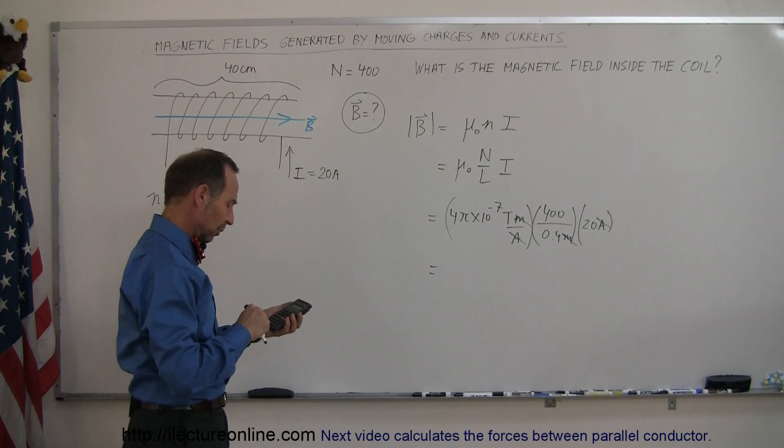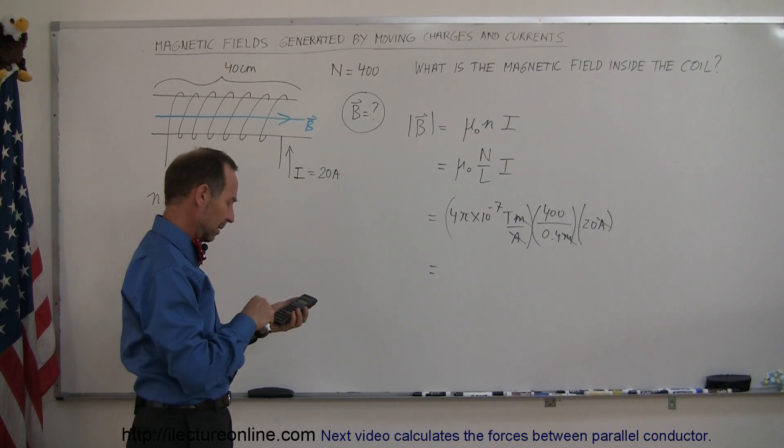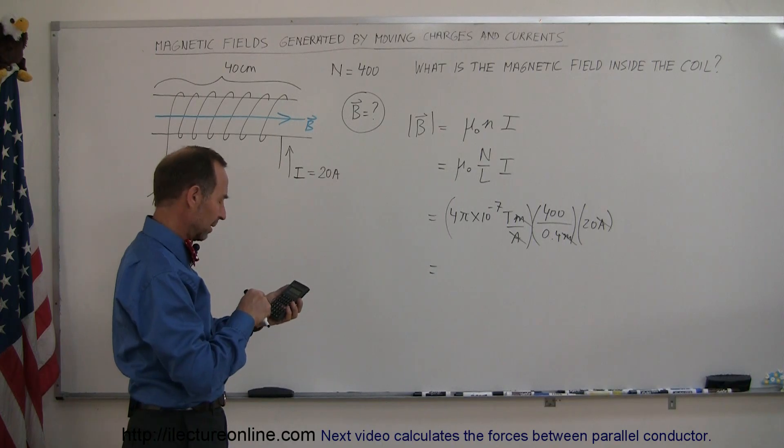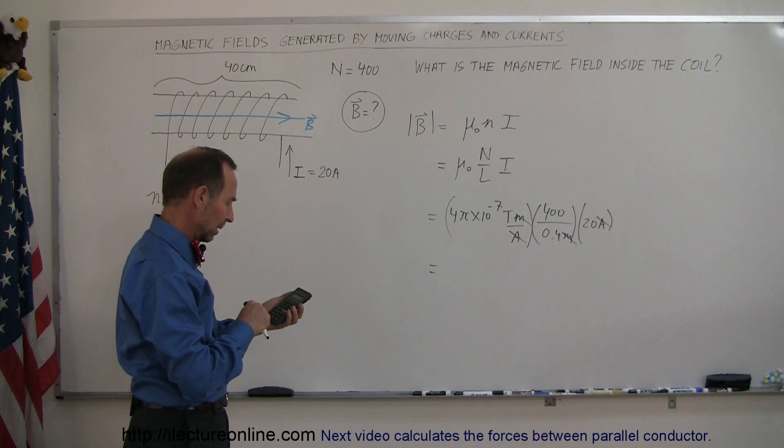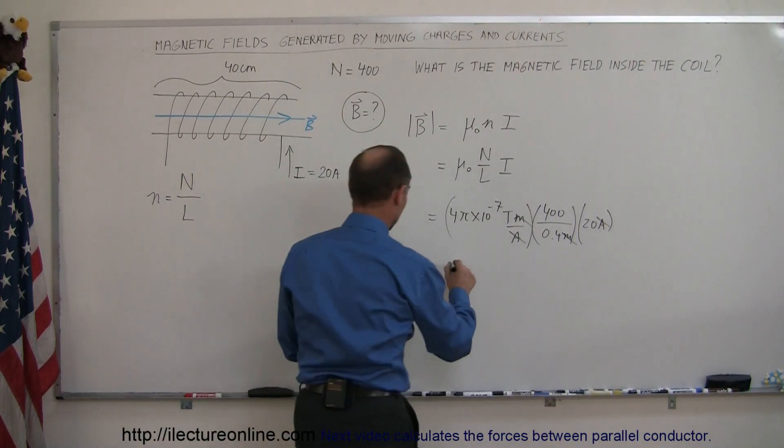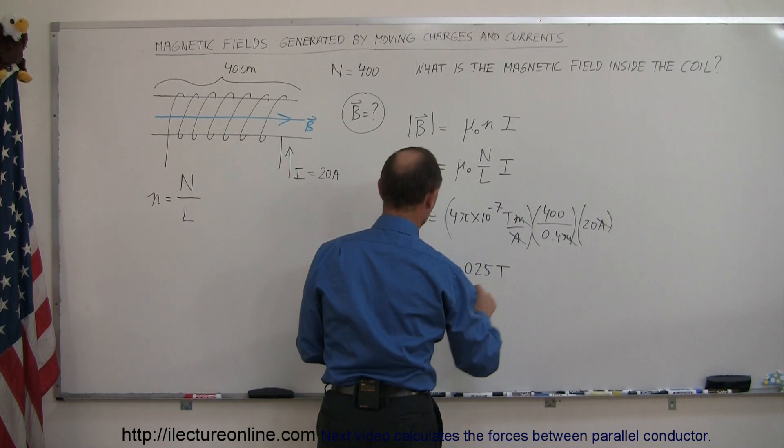So we go 4 times 10 to the minus 7, times π, times 400, divided by 0.4, and then multiply it times 20. And we got 0.025 teslas.